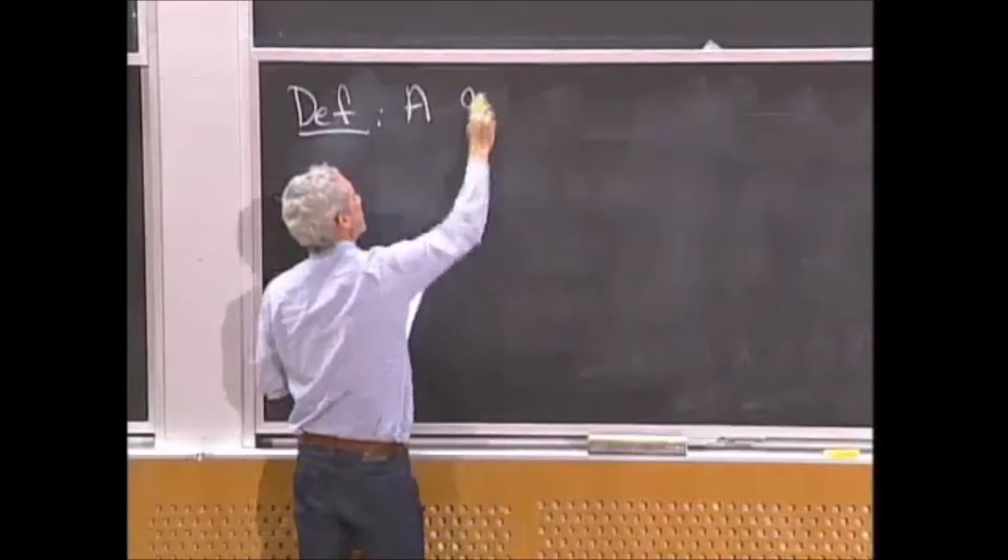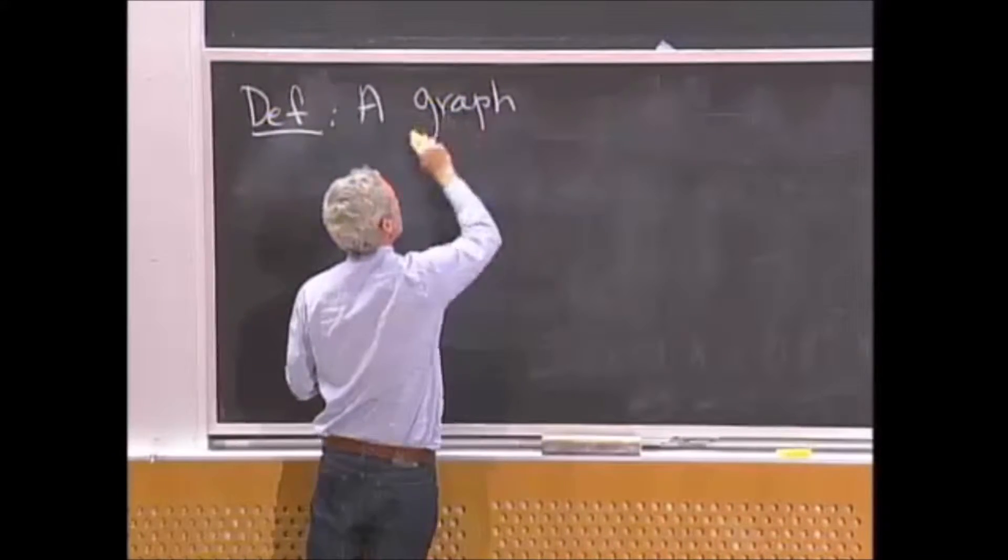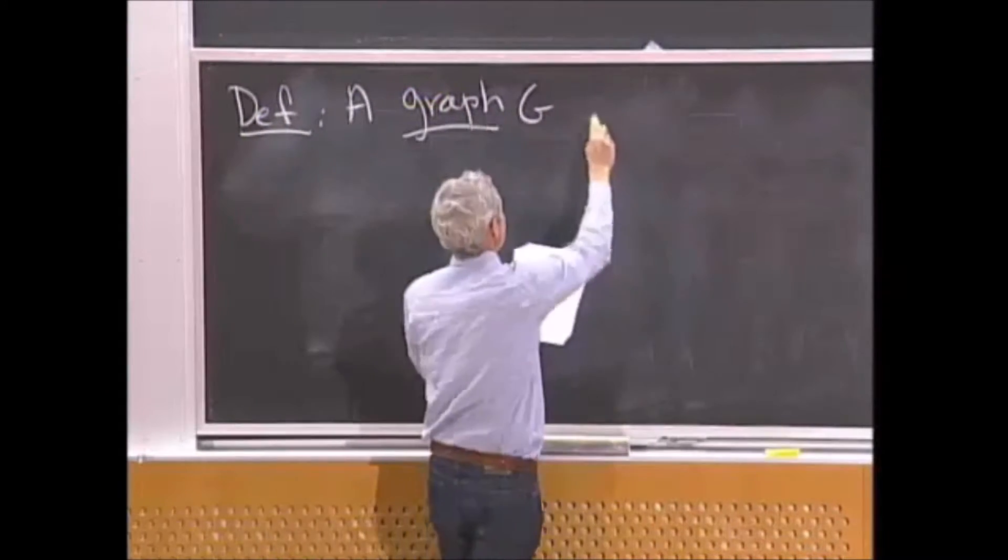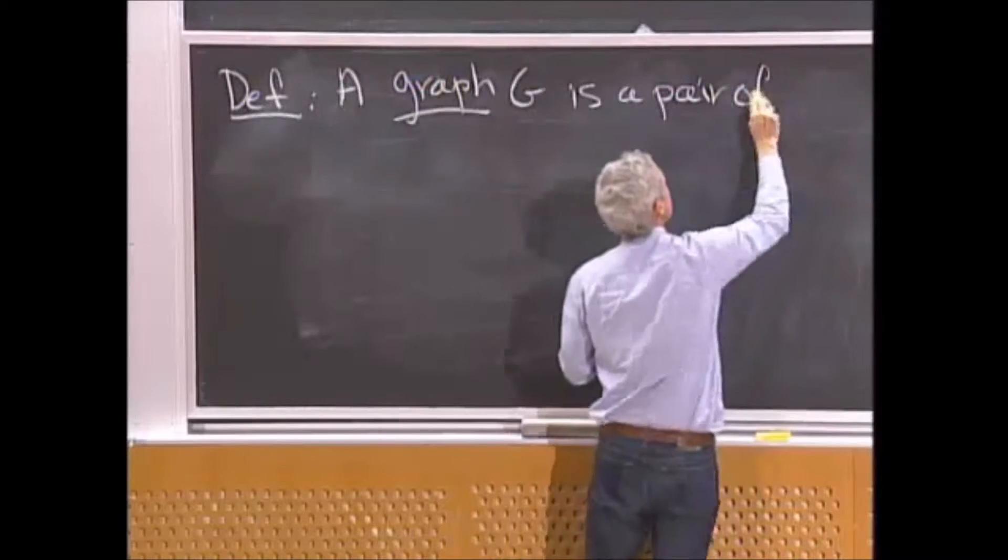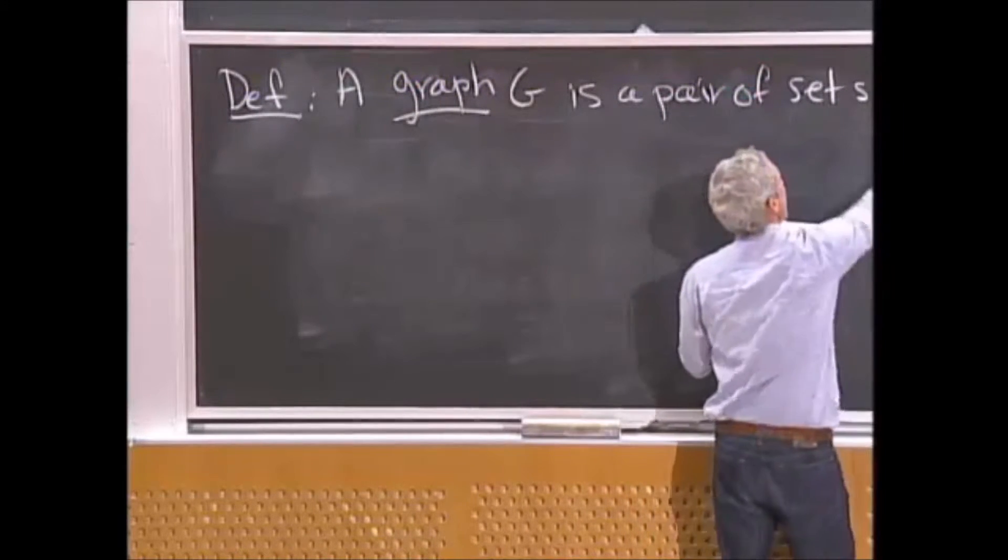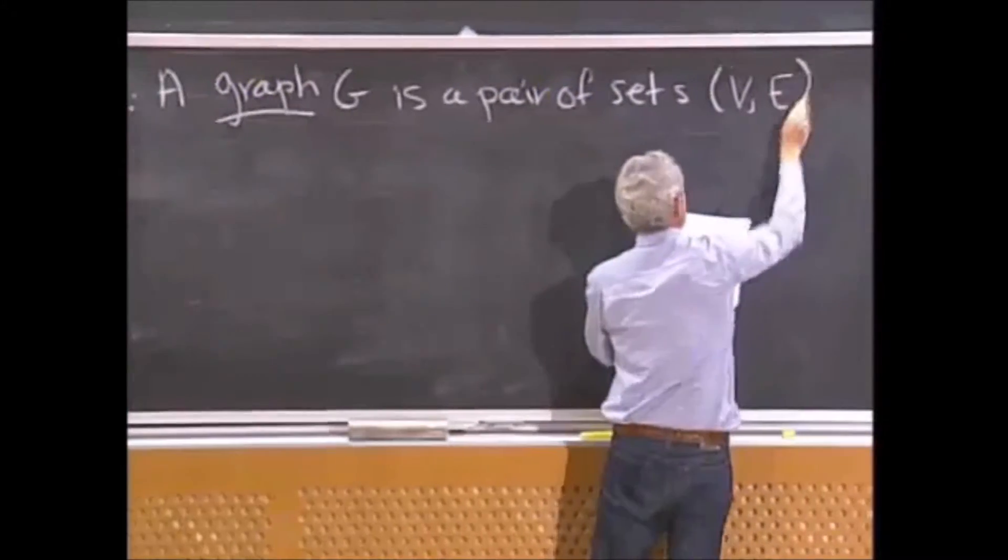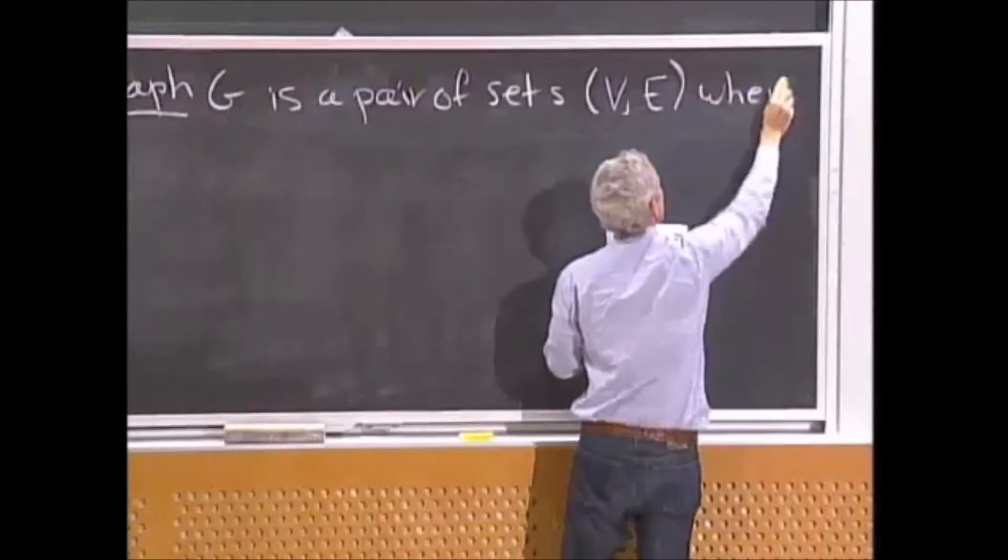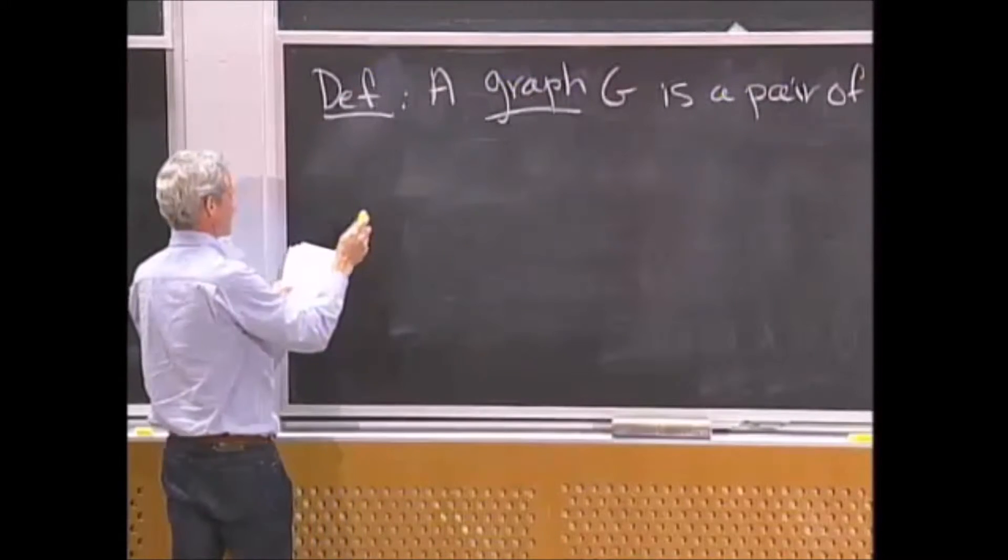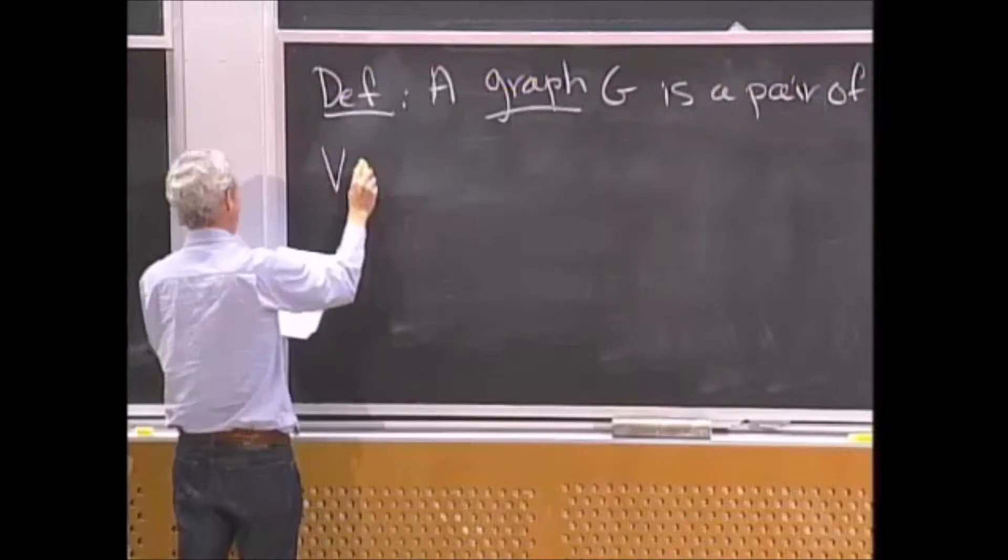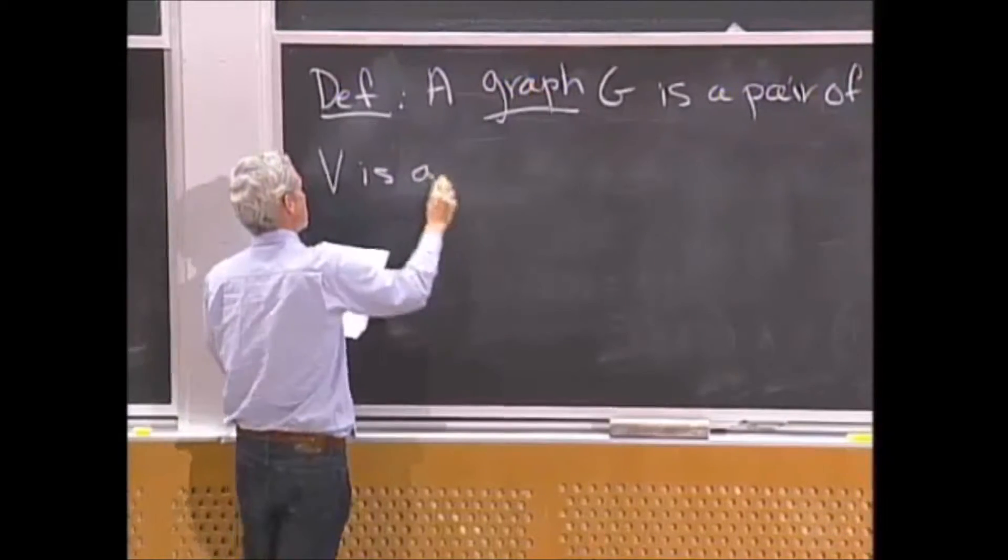A graph G is a pair of sets, often called V and E, where V is a set of elements called vertices or nodes. And it has to be non-empty here in this class.